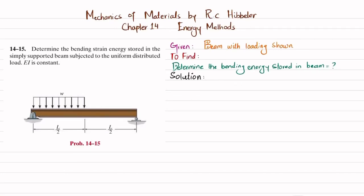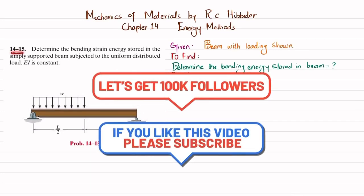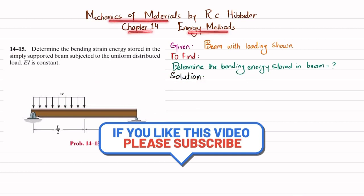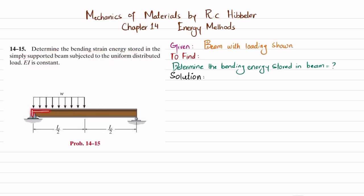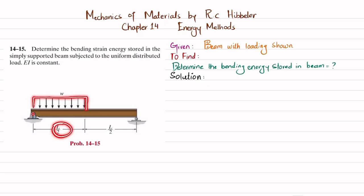Welcome back. In this video we are going to solve problem 14-15, taken from chapter 14 'Energy Methods' in the book Mechanics of Materials by RC Hibbeler. The problem statement is: determine the bending strain energy stored in a simply supported beam subjected to a uniformly distributed load, where EI is constant. The beam has a pin support at one end and a roller support at the other, with a uniformly distributed load over a length of L/2 from the pin support.